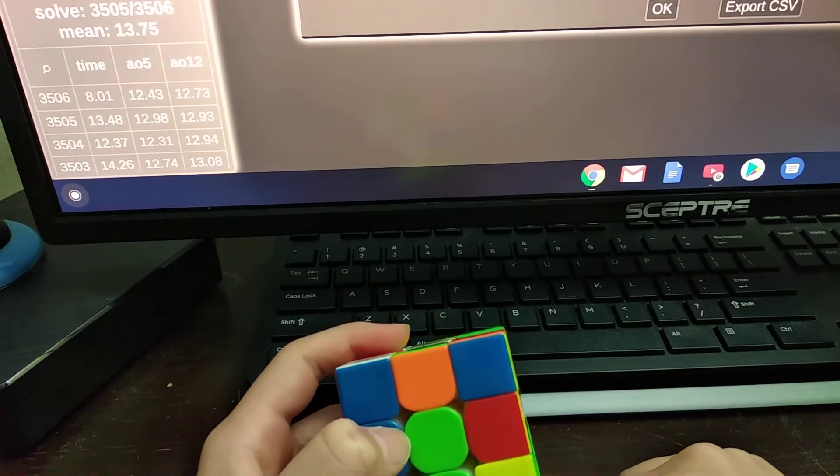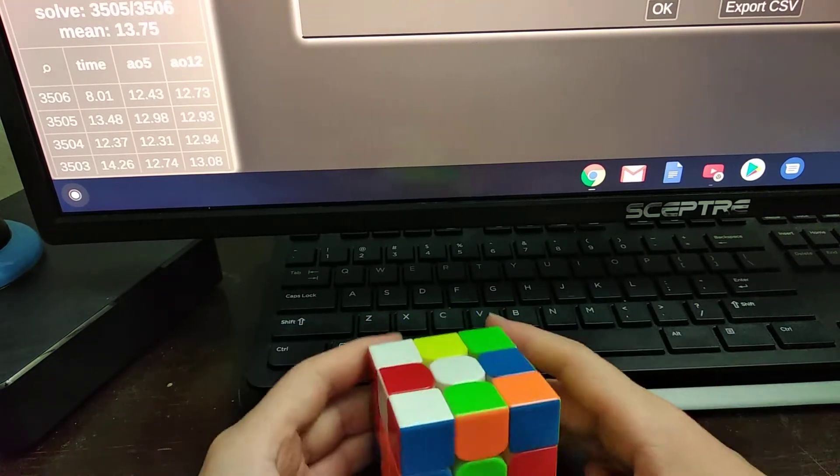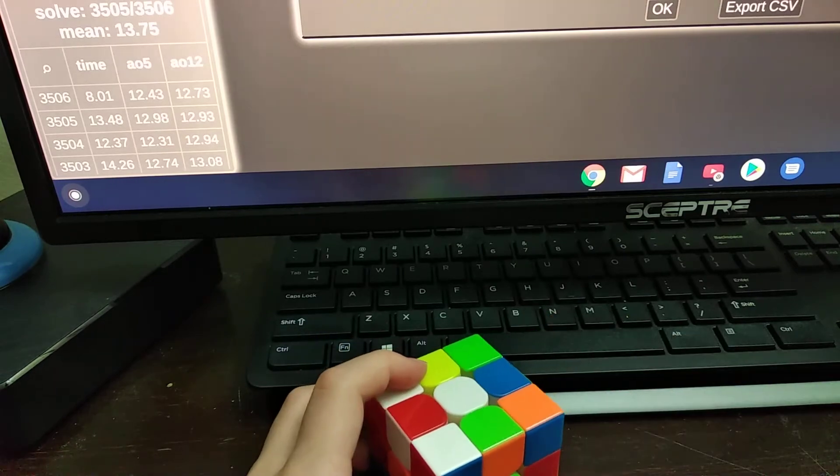Hey guys, today I'll be reconstructing my 8.01 PB single, which could have been sub-8 if I didn't lock up on a Y perm.